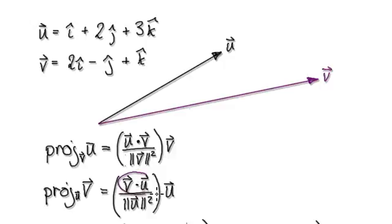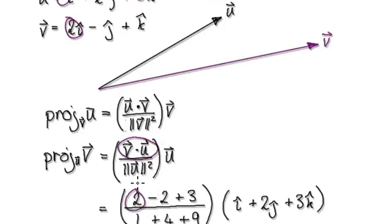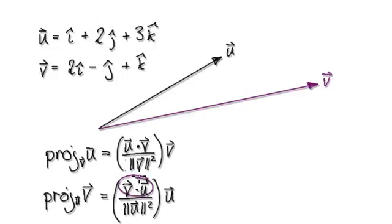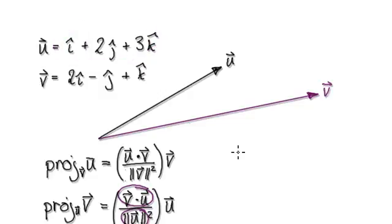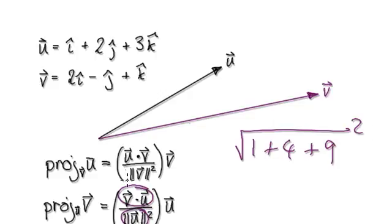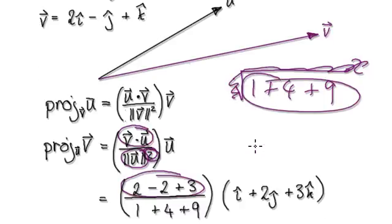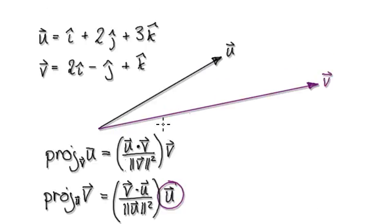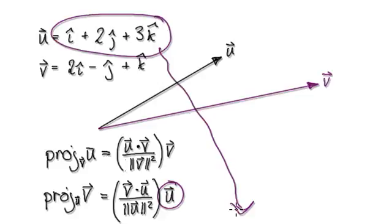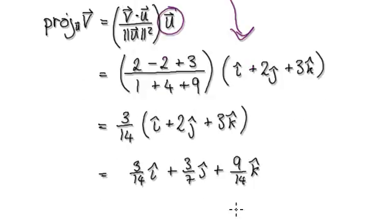To do this, perform your dot product. Your dot product would be this times this — that would be two. Perform your dot product, which gives you this whole thing here. Now work out the magnitude of U. The magnitude of U squared would be 1 plus 4 plus 9. Since we're squaring it, that leaves us with 1, 4, 9. Then carry the vector U down.